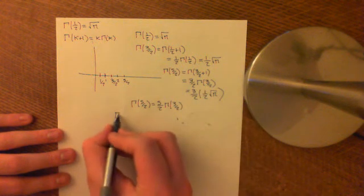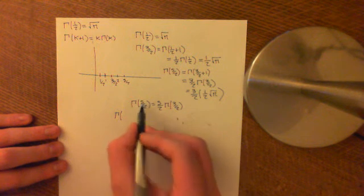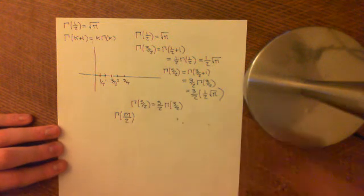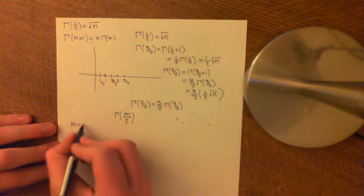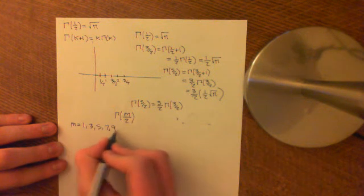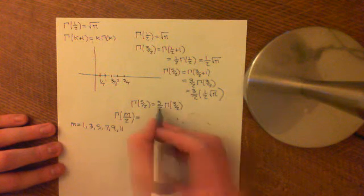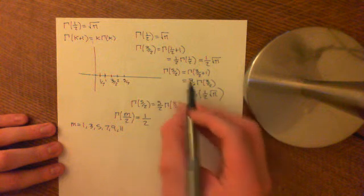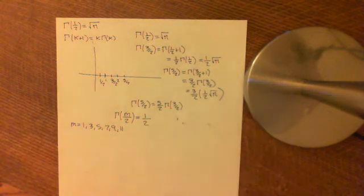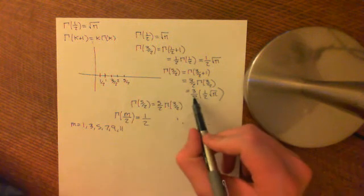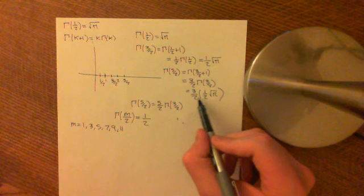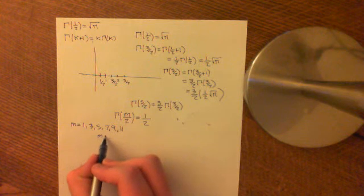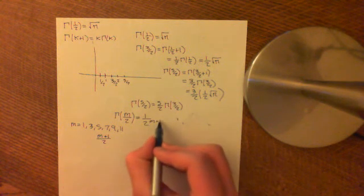In general, for gamma of M over 2 where M is an odd number — 1, 3, 5, 7, etc. — the powers of 2 gather in the denominator. The number of 2s in the denominator is M plus 1 over 2: for M equal to 1, that's 1; for M equal to 3, that's 2; for M equal to 5, that's 3. So the denominator is 2 to the power of (M plus 1)/2, which correctly tracks how many steps up from gamma of a half you have taken.